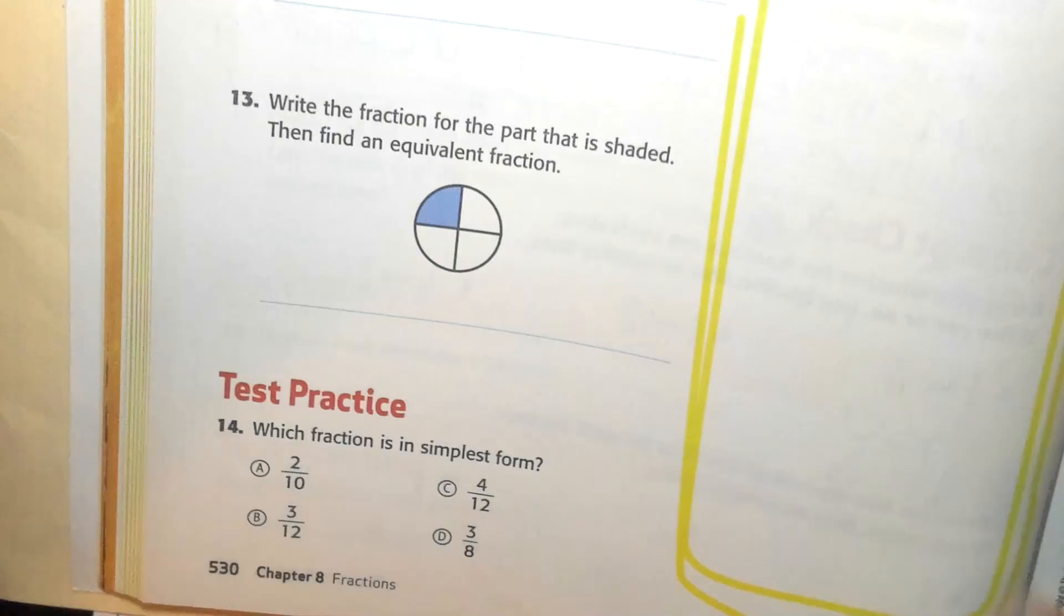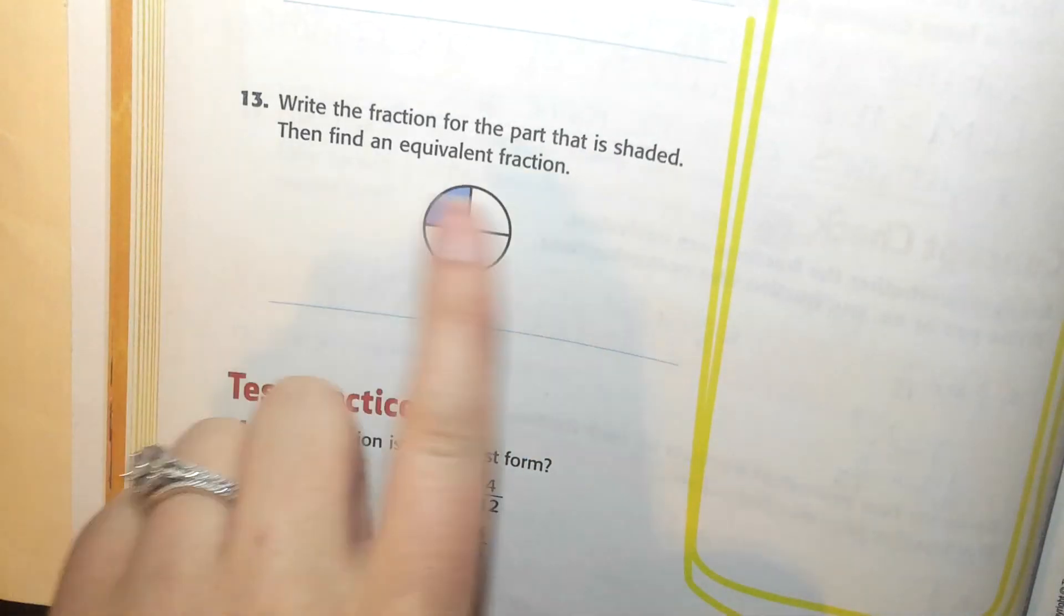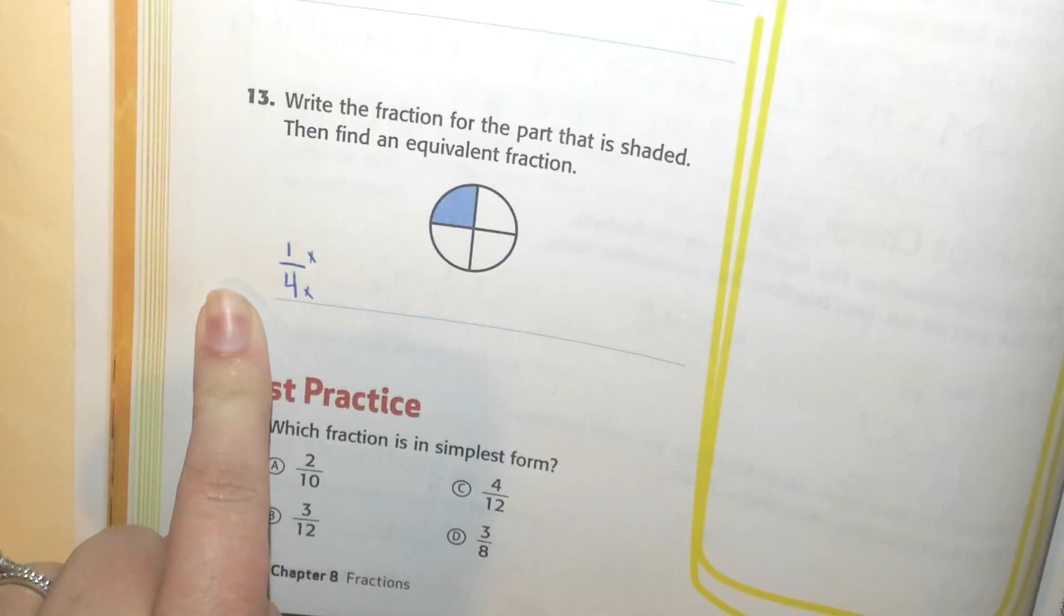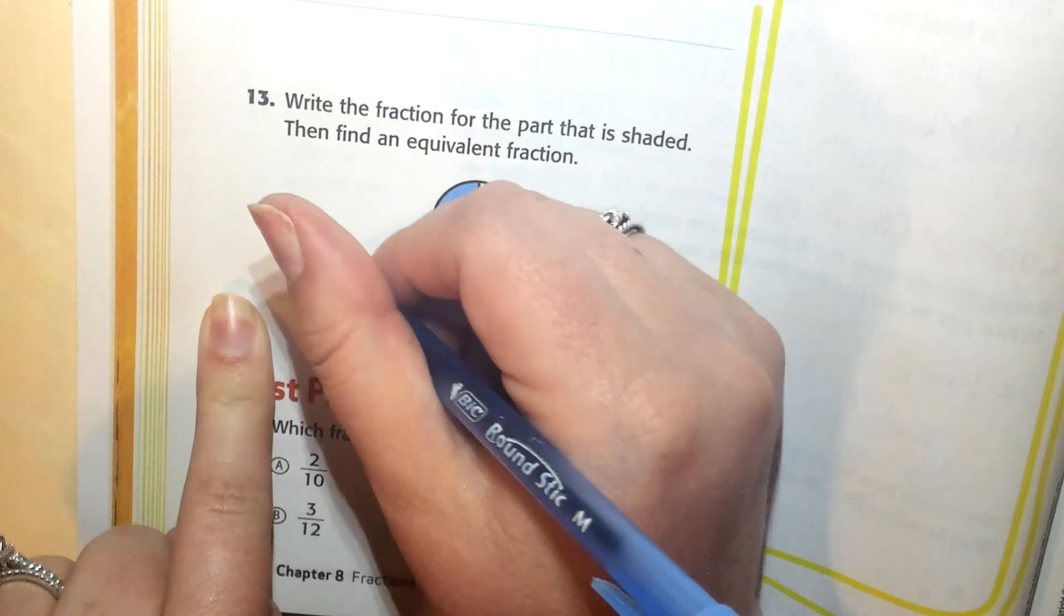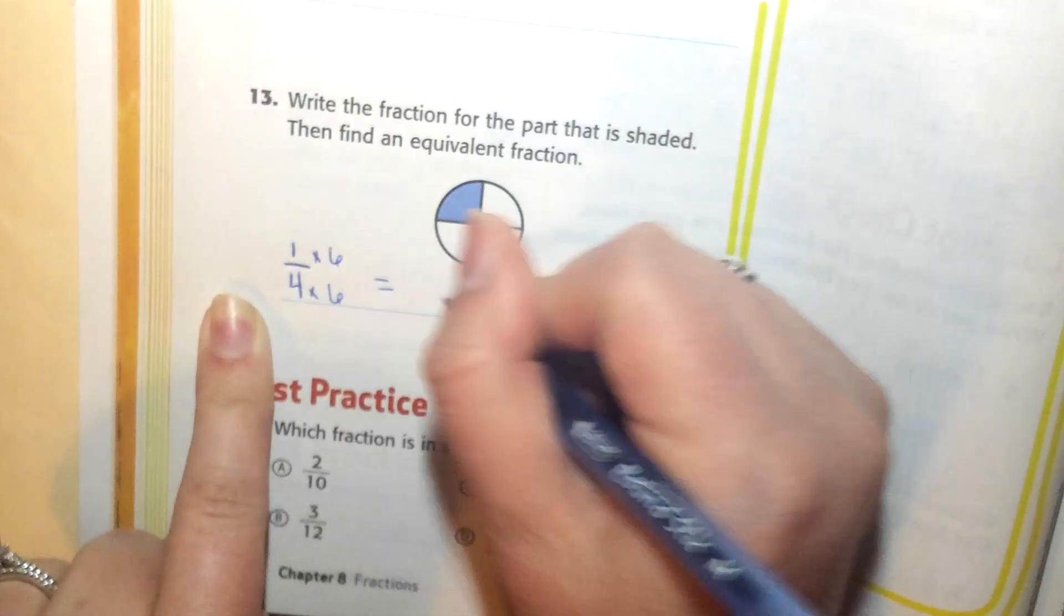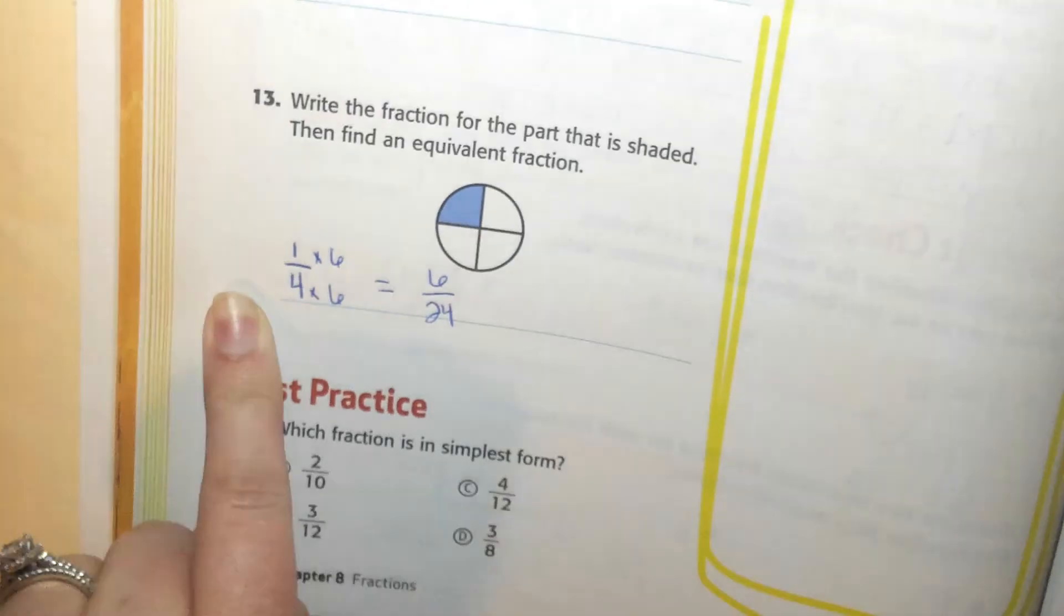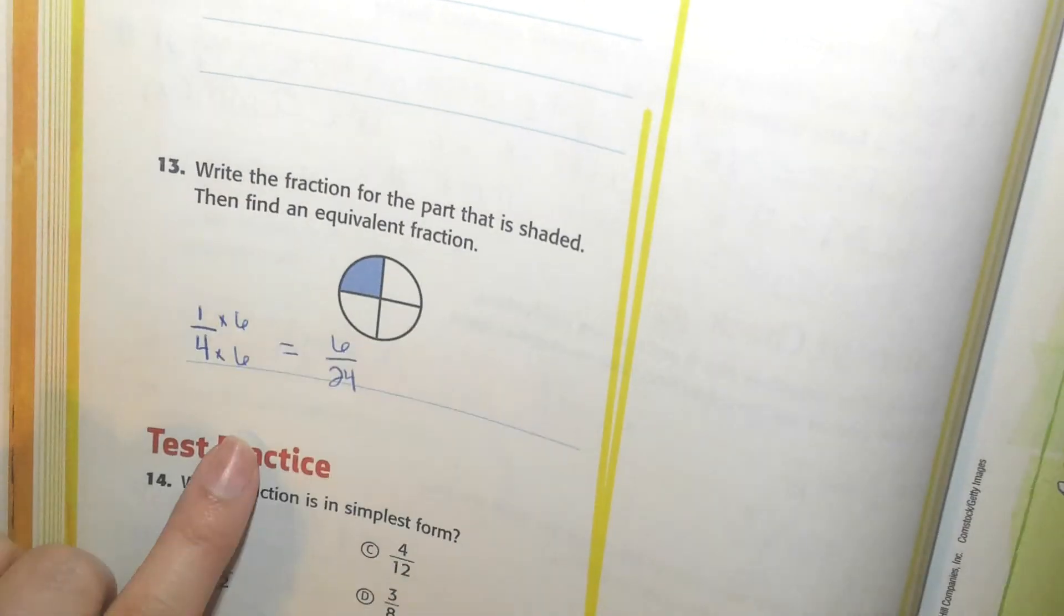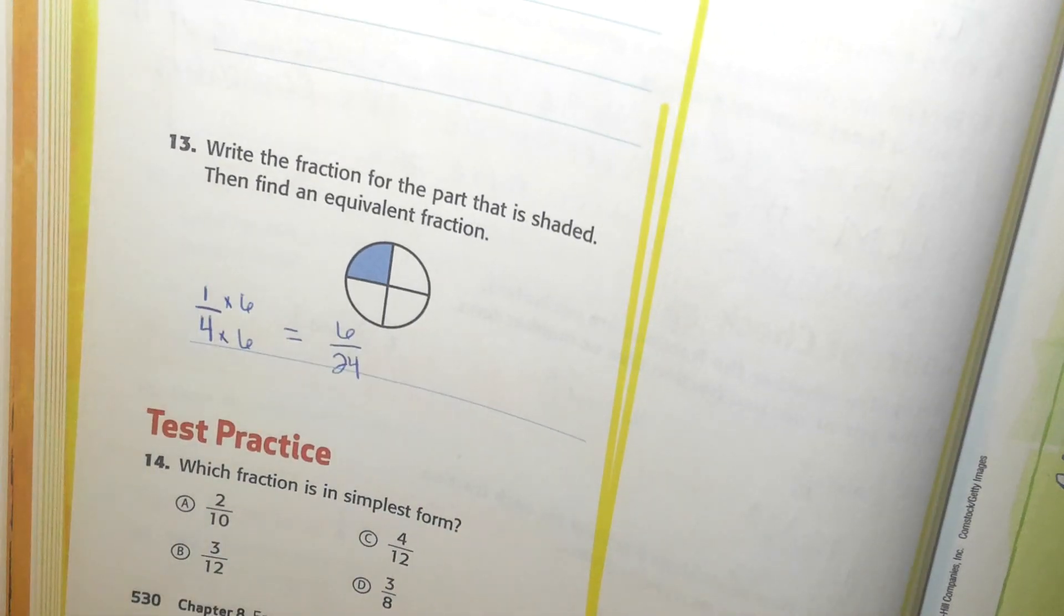Number 13 says write the fraction for the part that is shaded, then write an equivalent fraction. So looking at this fraction here, I have one, two, three, four possible parts. That's my denominator, and just one is shaded. So this fraction represents one-fourth. An equivalent fraction I can find by multiplying this fraction by the same number on the numerator and the same number on the denominator. This time, instead of doing two like I have been, I can multiply by, how about by six? If I multiply by six, I get six-twenty-fourths. So those two equivalent fractions are one-fourth and six-twenty-fourths. Don't forget, you need to go back and do all of the questions on these pages that I didn't do, and bring all of your questions to Zoom on Tuesday. I will see you at 9:30 on Tuesday.